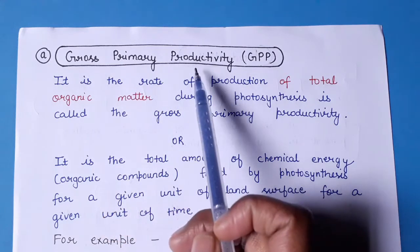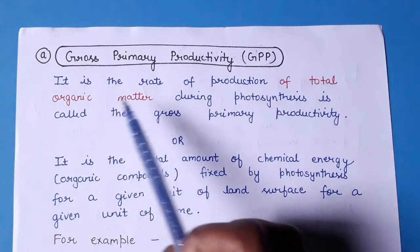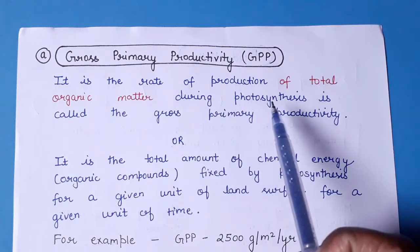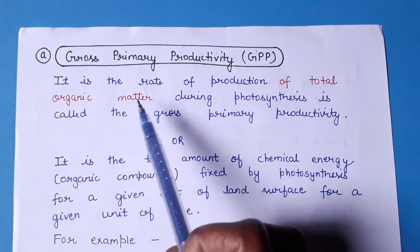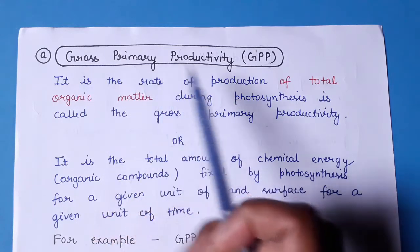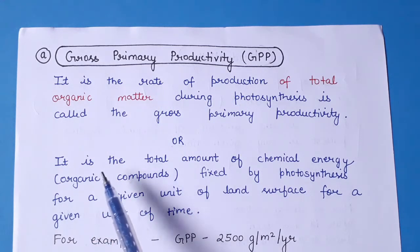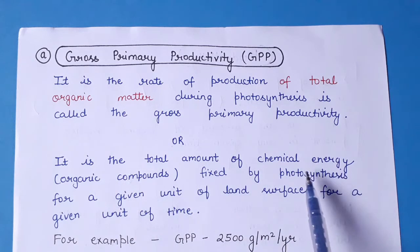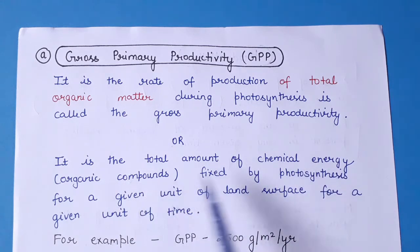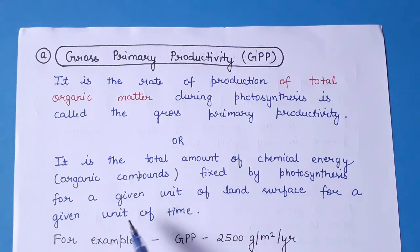Coming to the first type: gross primary productivity (GPP). It is the rate of production of total organic matter through photosynthesis. The total amount of organic matter produced by the primary producers is called gross primary productivity. It can also be expressed as the total amount of chemical energy or organic compounds fixed by photosynthesis for a given unit of land surface per unit of time.